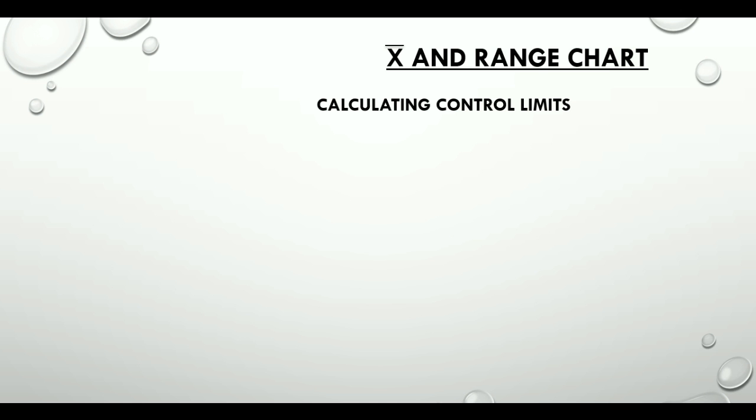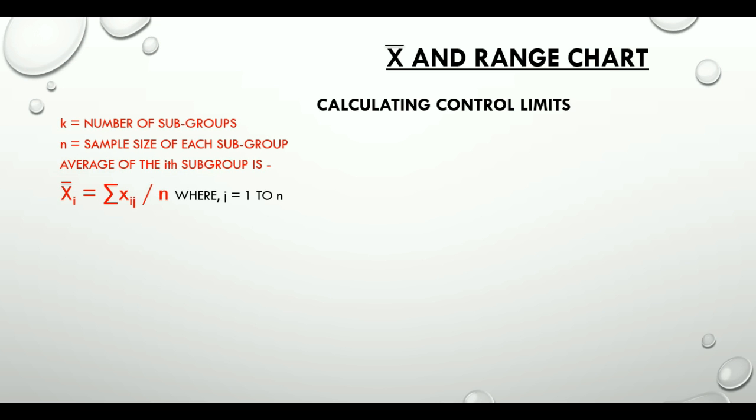What we would require to calculate control limits is K, the number of subgroups, N which is the sample size of each subgroup. Average of the ith subgroup that is XI bar is equal to the summation of XIJ divided by N where J can take values from 1 to N. When we say XIJ it indicates jth item of the ith subgroup.